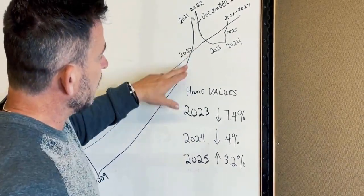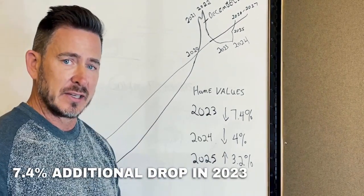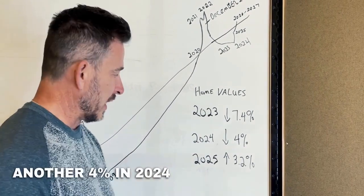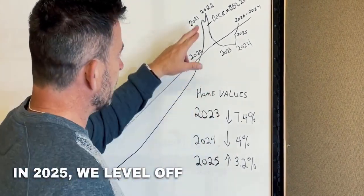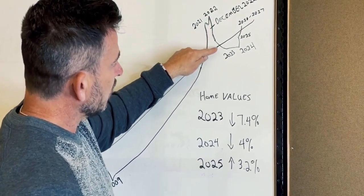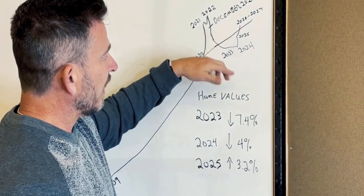And then what Goldman Sachs is predicting for 2023 is that we're going to see about a 7.4% additional drop. And then 24, another 4%, 3.5% to 4%. And then 25, we level off, and we actually see it go back up. So just kind of giving you a graph of where we were, to where we are today, to where we anticipate being through 2023, 2024, and then starting back up in 2025.